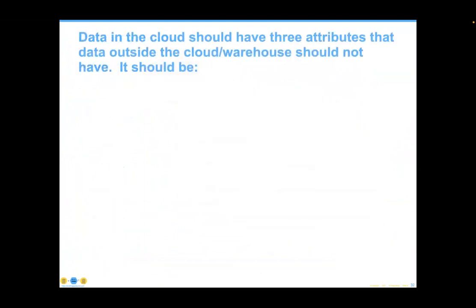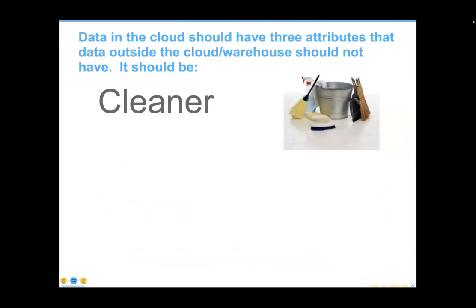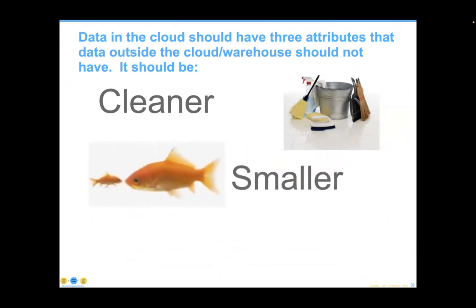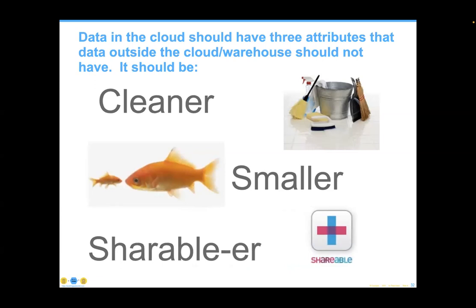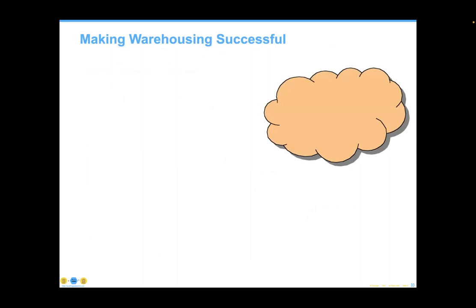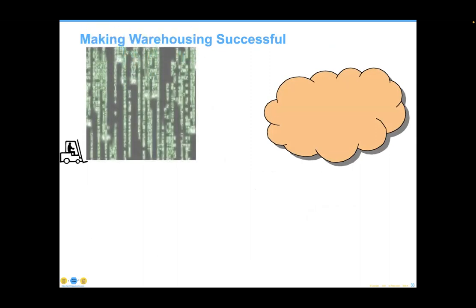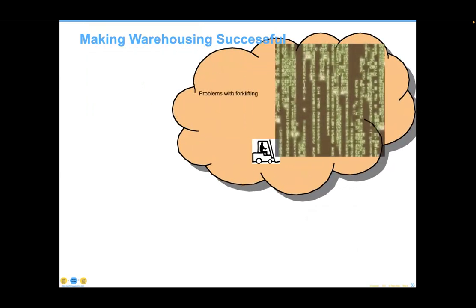The data inside the cloud should be cleaner than data outside of it. The data in the cloud should also be smaller by definition, and the reason it should be smaller is because it should be architecturally more shareable. These three are particularly important because most of what is problematic in warehousing environments follows poorly done practices — literally forklifting the data into the cloud. Forklifting provides no basis for decisions being made, completely ignores architectural or engineering guidance, and ignores the fact that 80% of all organizational data is redundant, obsolete, or trivial.